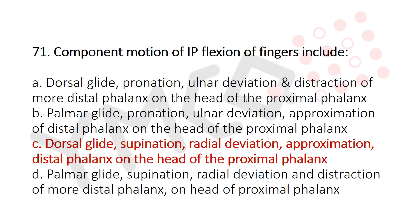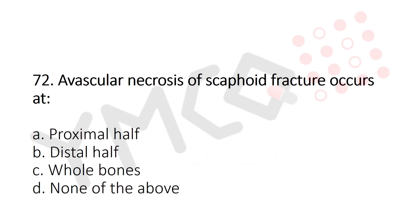Question 72: Avascular necrosis of scaphoid fracture occurs at — Option A: proximal half, Option B: distal half, Option C: whole bone, Option D: none of the above. The answer is Option A, proximal half.